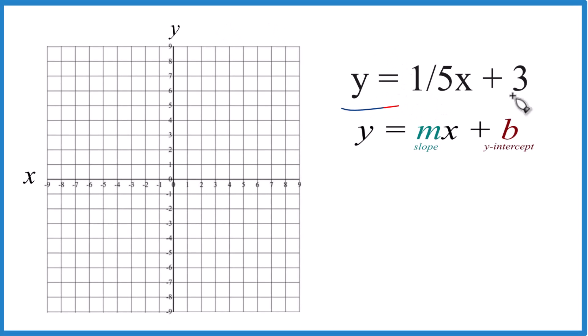Here's how you can graph the equation y equals one-fifth x plus three. We're going to use slope intercept form. If you use a table of values, you'll get the same answer, but this is probably easier.